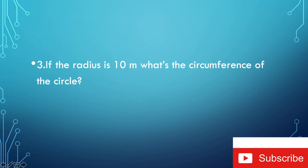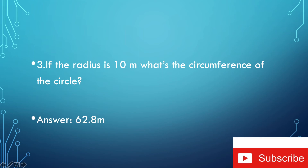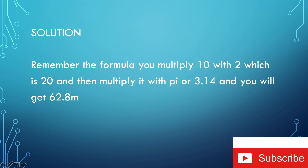Number 3: if the radius is 10 meters, what's the circumference of the circle? I'll give you time, or you can pause the video. The answer is 62.8 meters — but if you rounded it off, I'll consider it correct. Solution: remember the formula. You multiply 10 with 2, which is 20, then multiply it with pi or 3.14, and you'll get 62.8 meters.